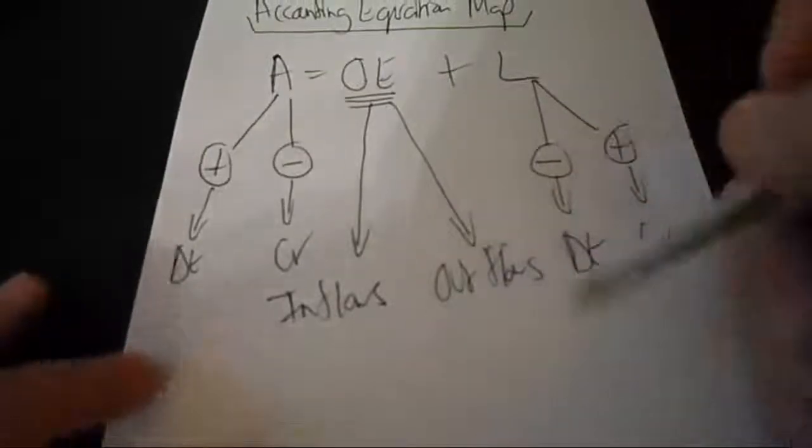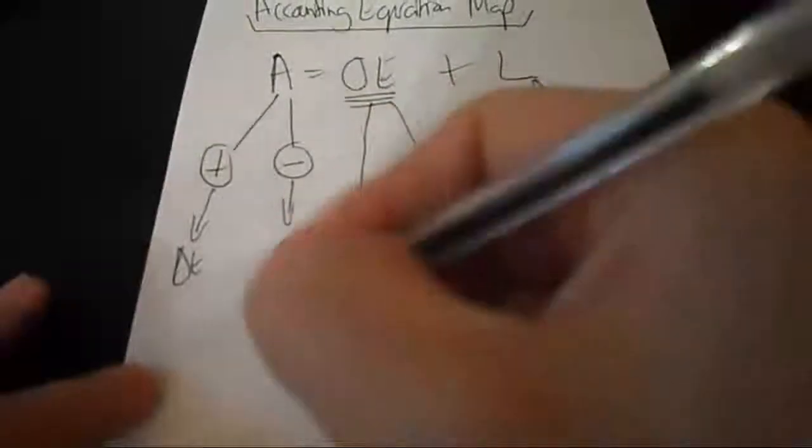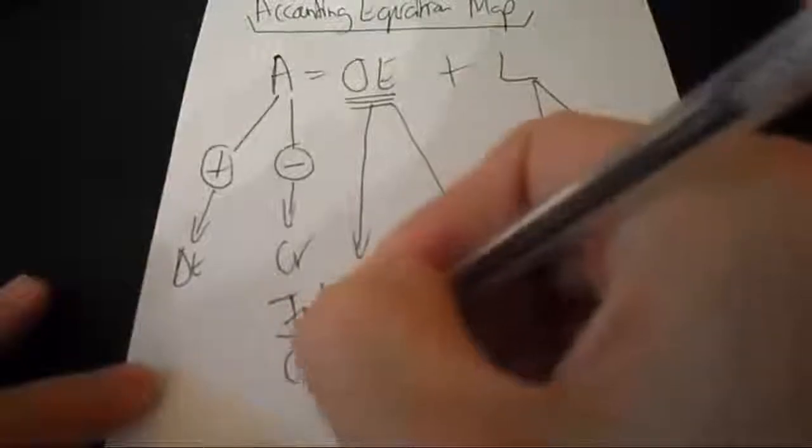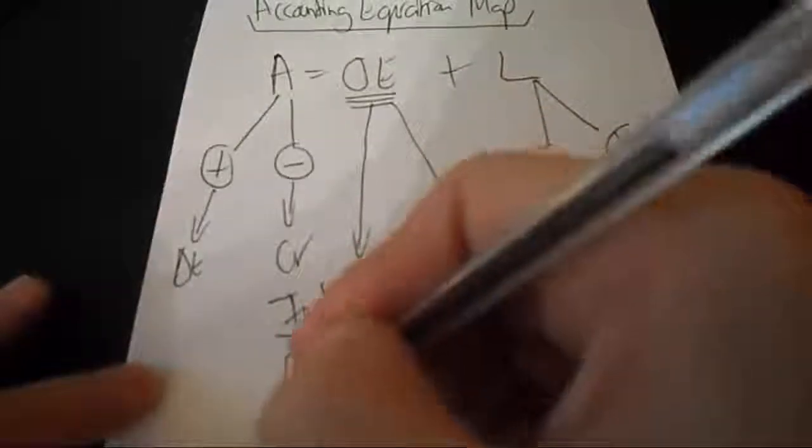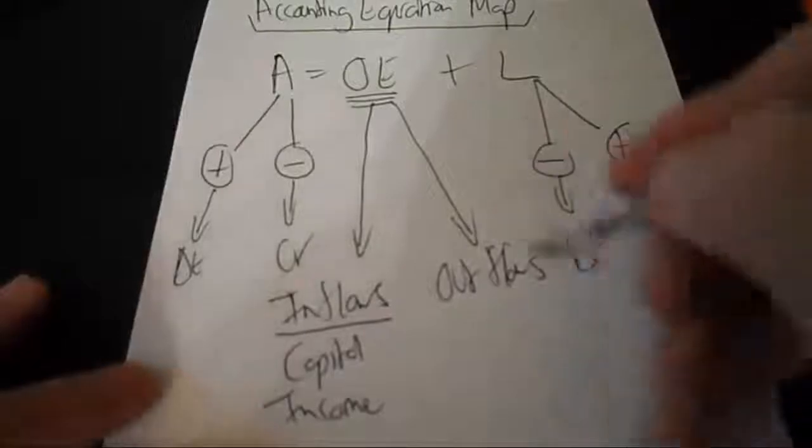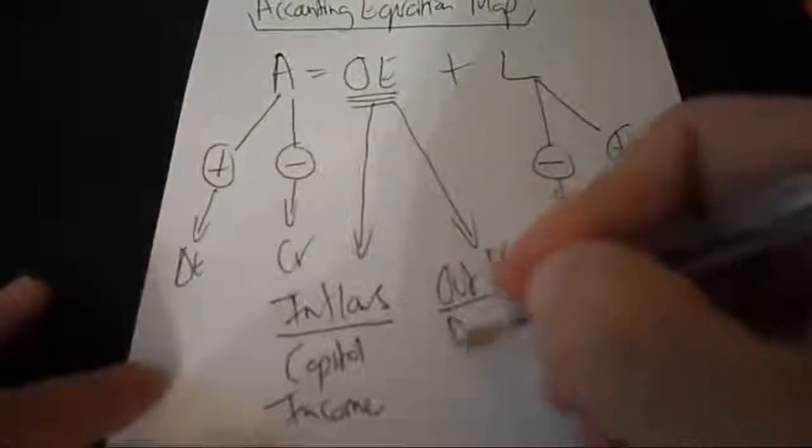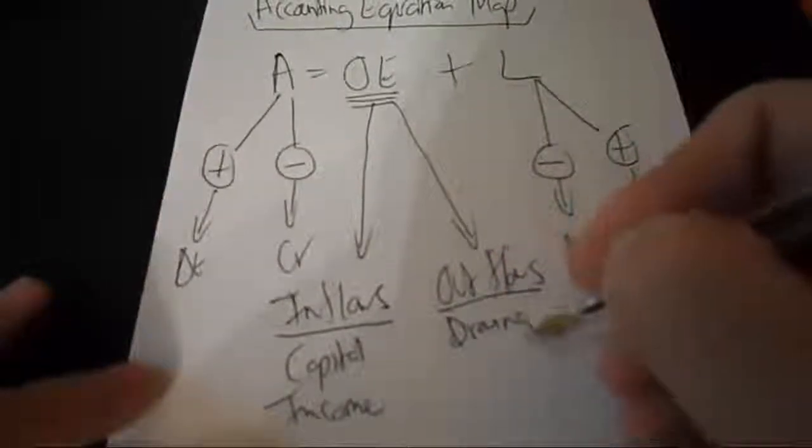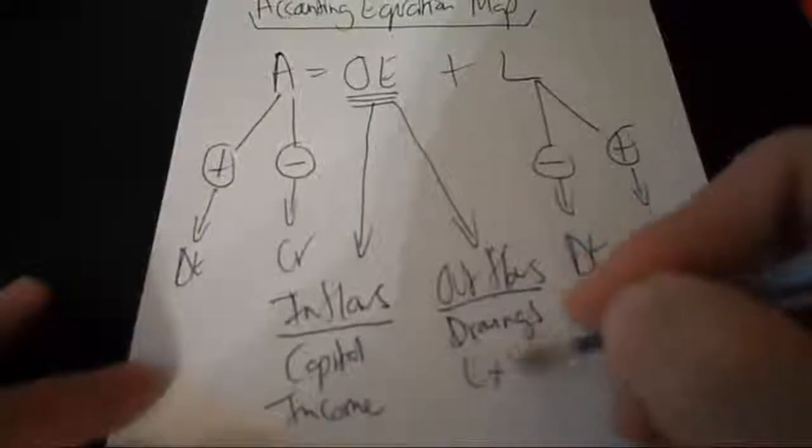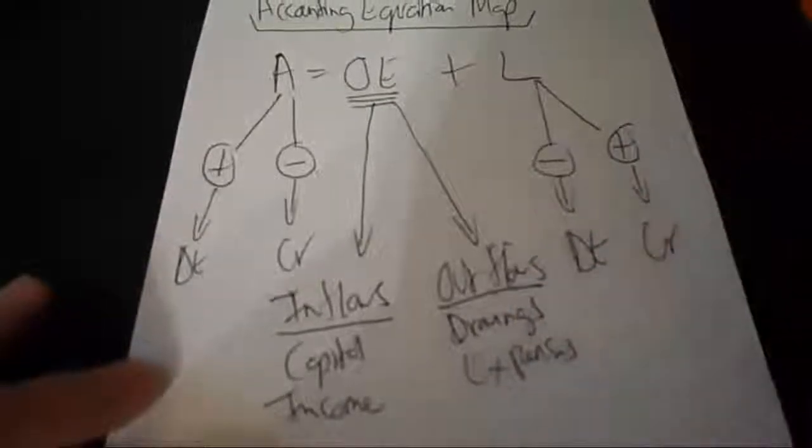Now your inflows make up capital and income, and your outflows make up drawings and expenses.